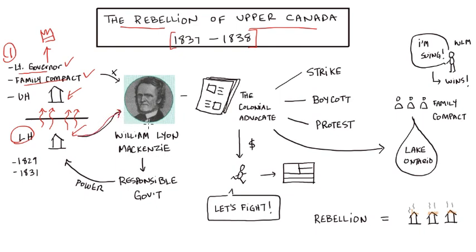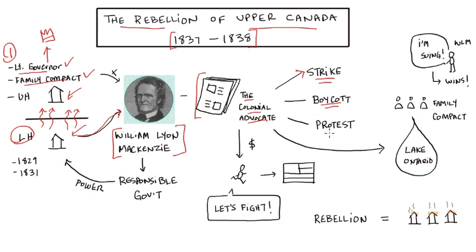One of the people who becomes a voice for the lower house is William Lyon Mackenzie. He is the editor and publisher of a newspaper called the Colonial Advocate, and initially he advocates for things like strikes, stopping work, boycotting British goods, and protest, in order for the concerns of the lower house to be heard by the upper house.